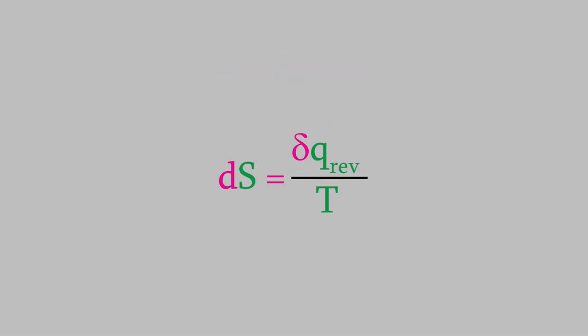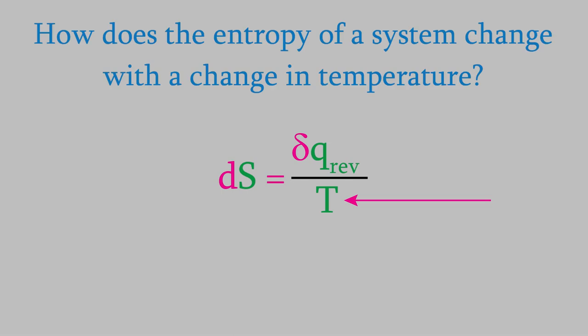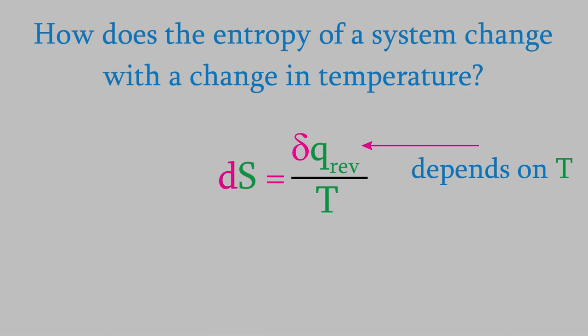So far, we've been looking at the entropy change that happens during a process that's all at one temperature. However, we can see that the temperature will have a big impact on the entropy. How do we calculate the change in entropy that happens when the temperature changes during our process? That's not a simple question, because the heat exchange also changes when the temperature changes, so both sides of the fraction depend on the temperature. So we need a different equation to calculate the entropy change when the temperature varies.